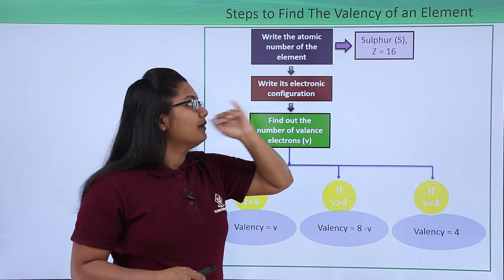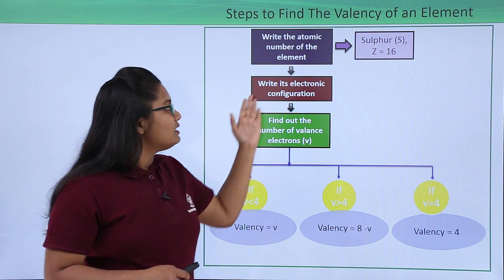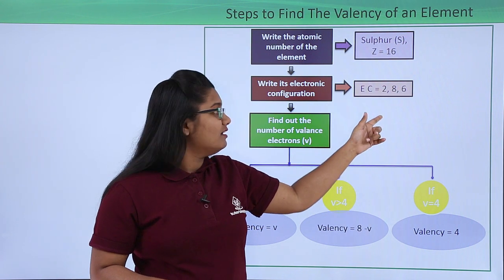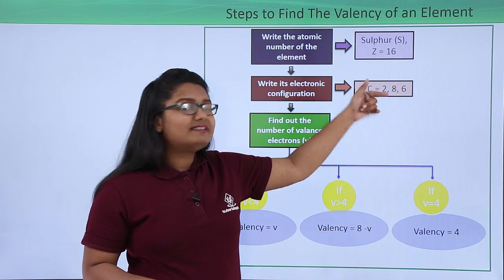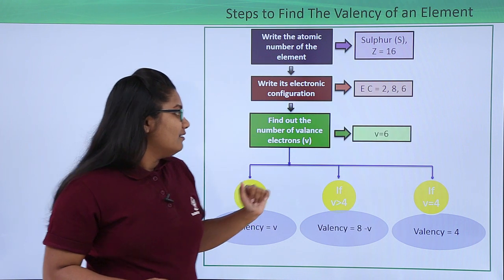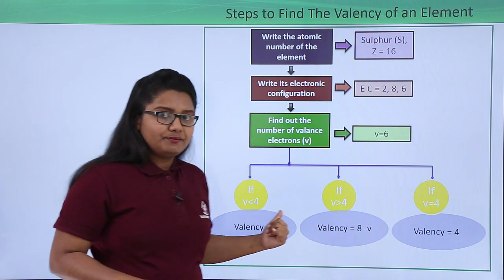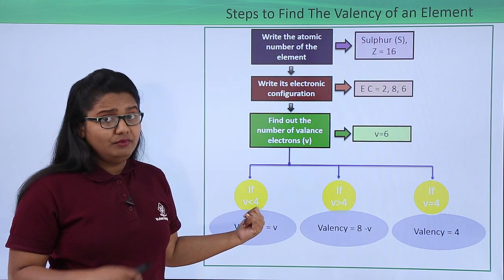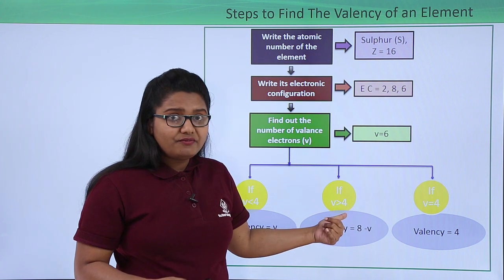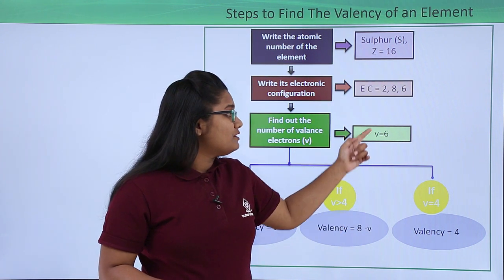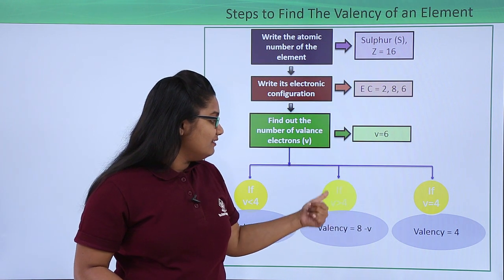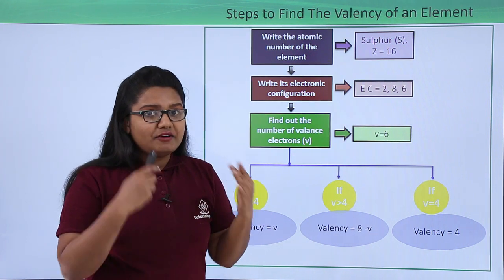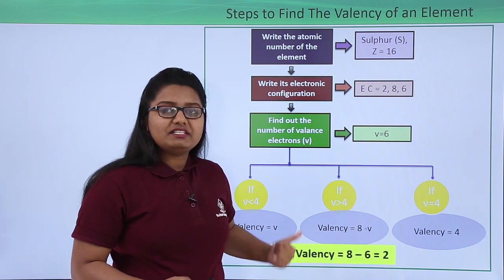For sulphur, which has an atomic number of 16, the electronic configuration is 2, 8, 6. We can clearly see that the valence electrons number 6. We check the conditions: is V less than 4? No. Is V greater than 4? Yes, 6 is greater than 4. So we apply the formula: valency = 8 − 6 = 2. The valency of sulphur is 2.